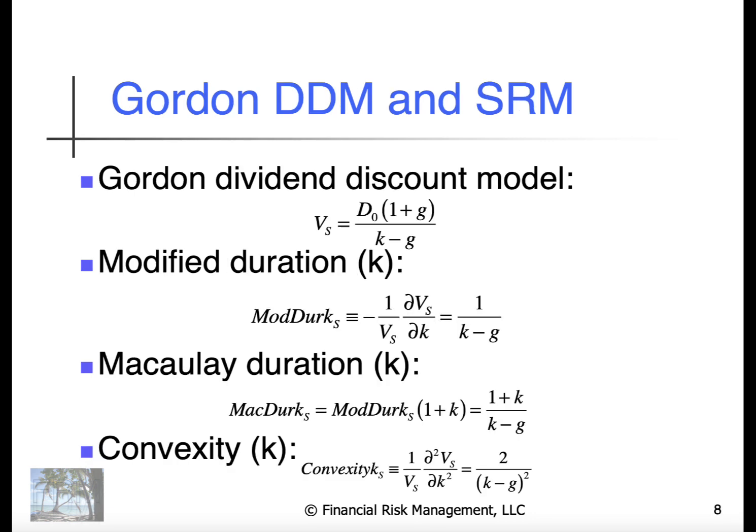If you recall the Gordon dividend discount model, we assume a constant growth rate of dividends and a constant investor's required rate of return. So the value of some stock is equal to D0 times 1 plus G divided by K minus G.